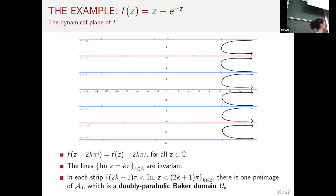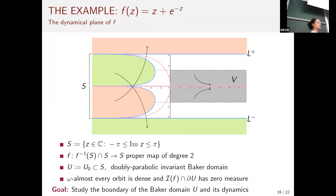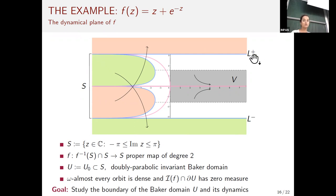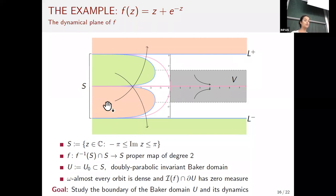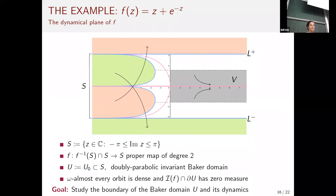By symmetry, we restrict to the strip S with imaginary part between -π and π. The boundary lines L+ and L- each have two pre-images in the strip: themselves (forward invariant) and one other preimage. The orange regions near L+ and L- are mapped outside the strip, while the rest of the strip is mapped to the whole strip with degree two. The gray region is a possible absorbing domain for the function.